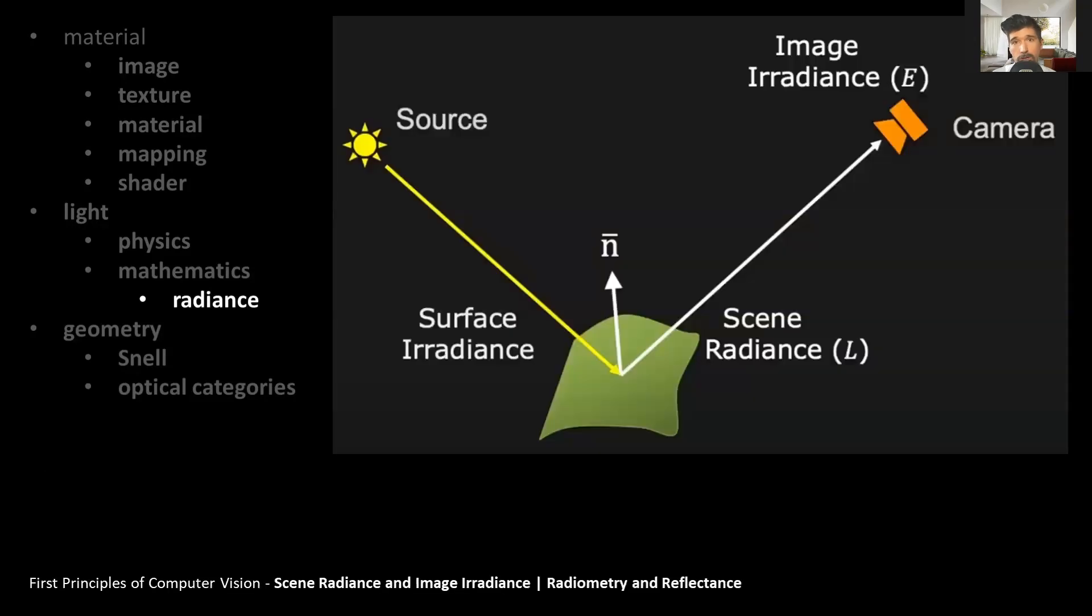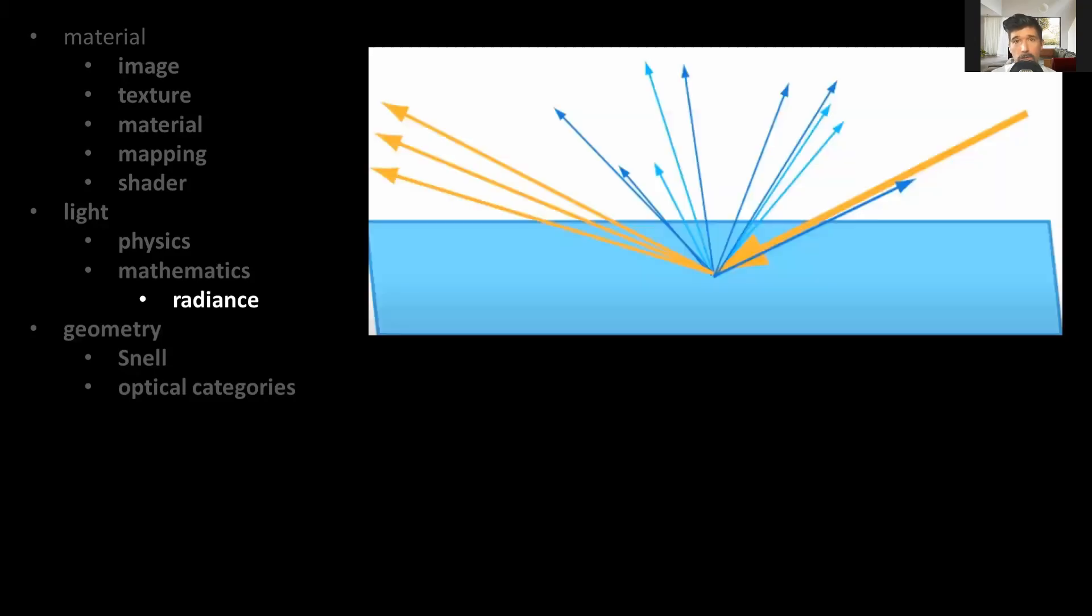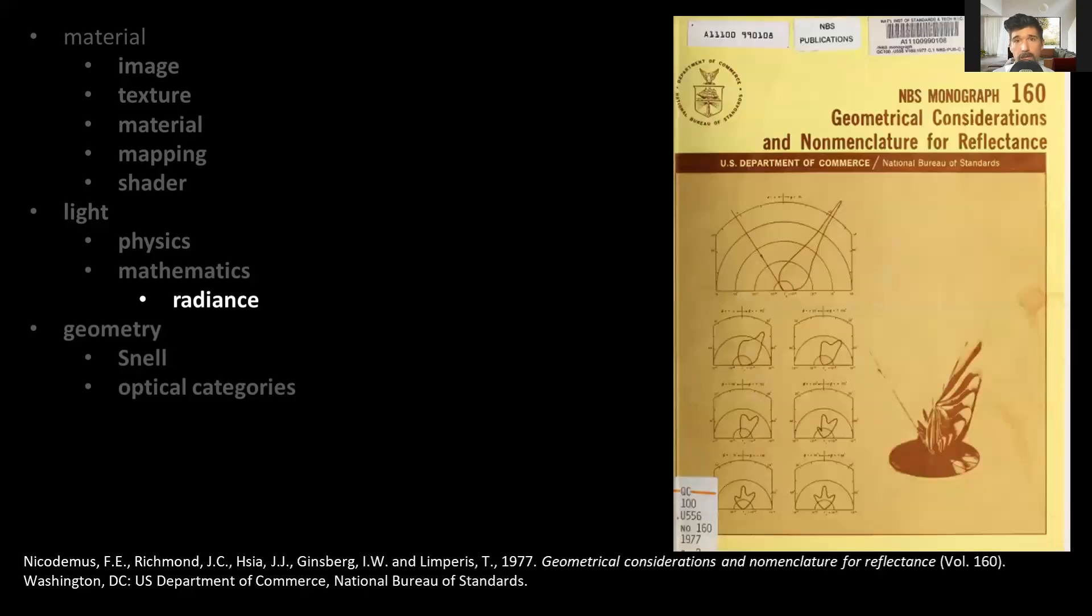We can use the term scene radiance to establish a relationship between the brightness of a point in the scene and its brightness in the image by observing this simple scene representation. In it, the light ray reaches a certain point on the surface and produces a radiance in the direction of the camera. Coming back to this image, we can observe that the light ray hitting a surface can create a diffuse or a specular behavior.